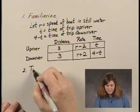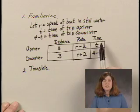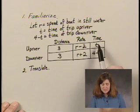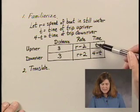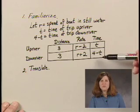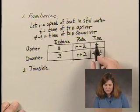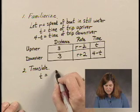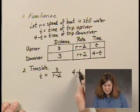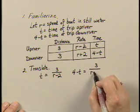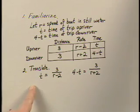When we translate the problem to equations, we can use distance equals rate times time. In this case, I'm going to use time equals distance divided by rate, because the times are connected with addition — one is t and one is four minus t. So the upriver time t equals the upriver distance divided by the upriver rate. The downriver time, four minus t, equals the downriver distance divided by the downriver rate. Both of these have to be true, and I'm going to substitute in the next step to solve.